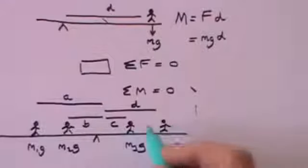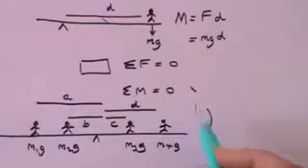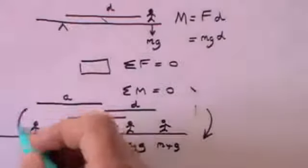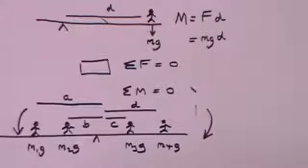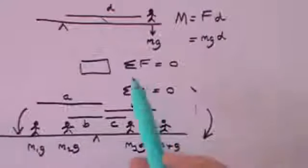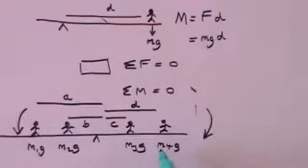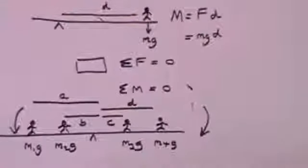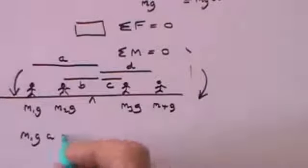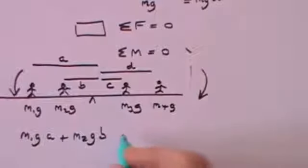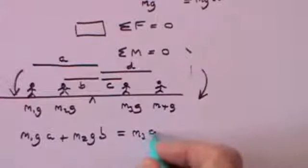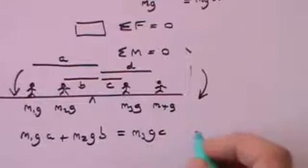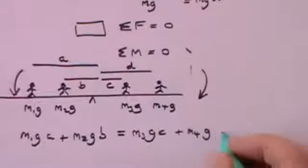The masses on this side are achieving a turning effect in the clockwise direction. The masses on this side are trying to achieve a turning effect in the anti-clockwise direction. And if there is to be no net movement, if that seesaw is to balance, then the sum of the moments must be equal. In other words, the moments on this side must balance the moments on that side. That means that m1g times its distance from the fulcrum a, plus m2g times its distance from the fulcrum b, must equal m3g times c, plus m4g times its distance from the fulcrum d.